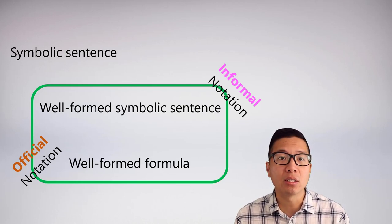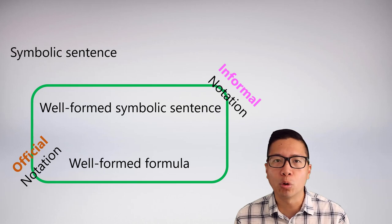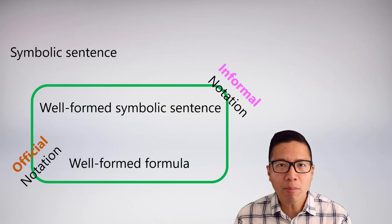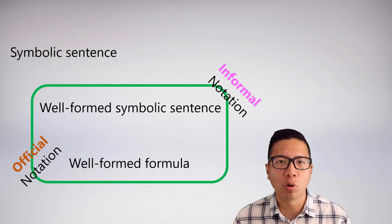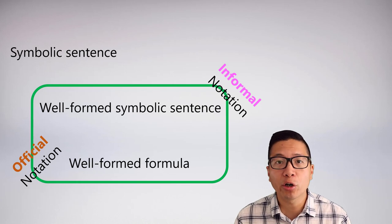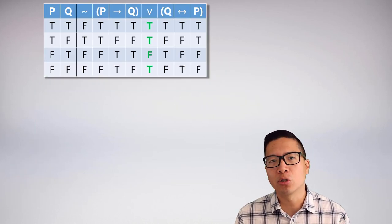They must be well-formed, meaning they must be in either informal or official notation. From that, we're able to take these well-formed sentences, statements, arguments, and sets of sentences and analyze them in terms of their truth.